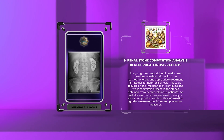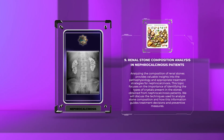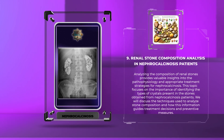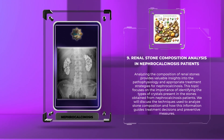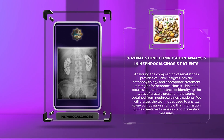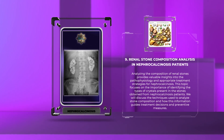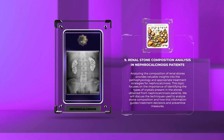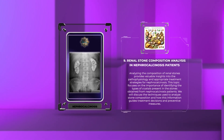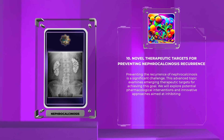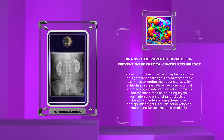Analyzing the composition of renal stones provides valuable insights into the pathophysiology and appropriate treatment strategies for nephrocalcinosis. This topic focuses on the importance of identifying the types of crystals present in stones obtained from nephrocalcinosis patients. We will discuss the techniques used to analyze stone composition and how this information guides treatment decisions and preventive measures.